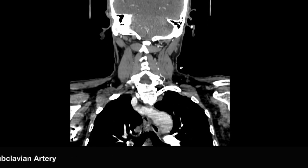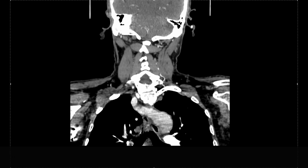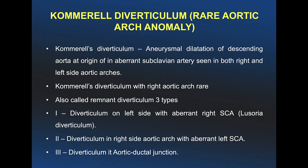In summary, Kommerell's diverticulum is nothing but an aneurysmal dilatation of the descending aorta at the origin of the subclavian artery. There are three types: the most common is left-sided aortic arch with aberrant right subclavian artery — also called lusoria diverticulum. The second most common is right-sided aortic arch with aberrant left subclavian artery. The third is at the aortoductal junction.